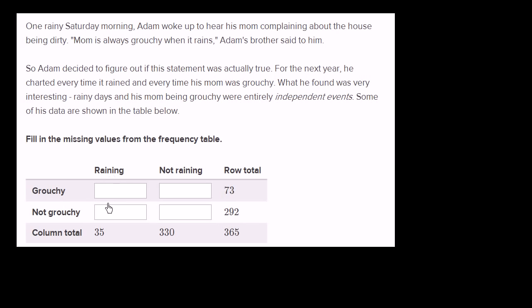Then he tabulated on the raining day whether his mom was grouchy or not grouchy, and on a not raining day whether his mom was grouchy or not grouchy. There was a total of 35 days it rained.